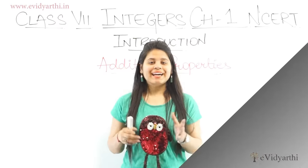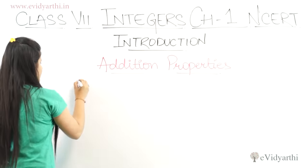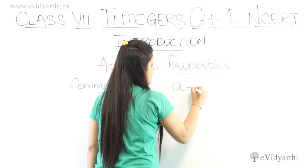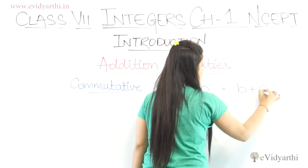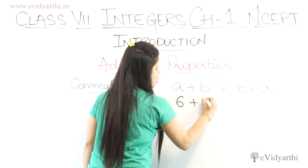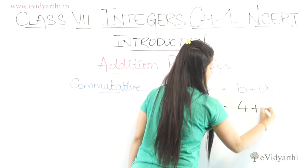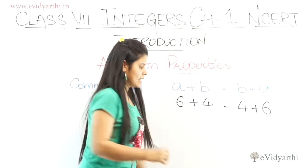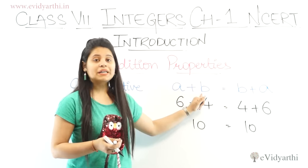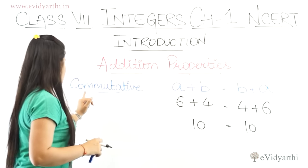Now let's discuss some properties regarding addition of integers. The first property is the commutative property. It is written as a plus b equals to b plus a. This means if you have two numbers, like 6 plus 4, it is the same as 4 plus 6 — both give 10. So a plus b equals b plus a, where a and b are any integers. You can swap the order.